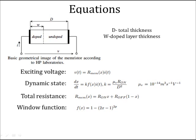The exciting voltage is the first equation, where R_mem is the total resistance of doped and undoped regions. X is a ratio of W over D.